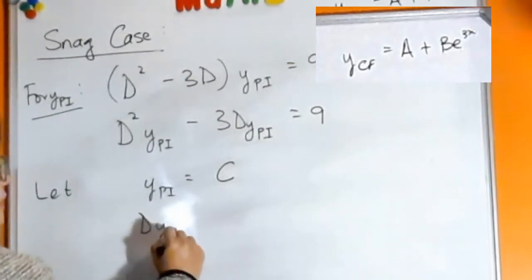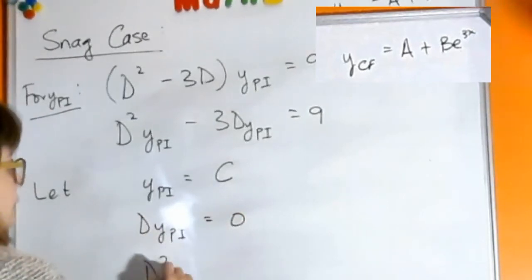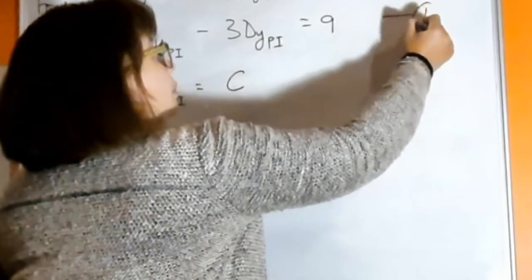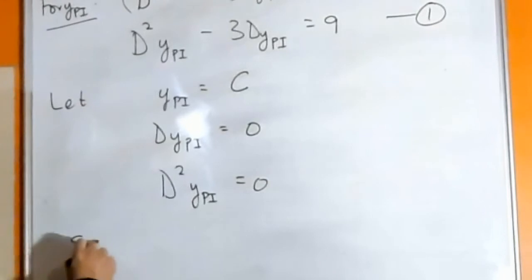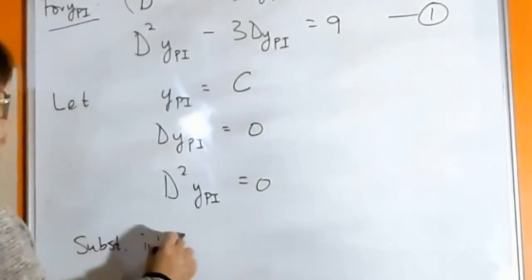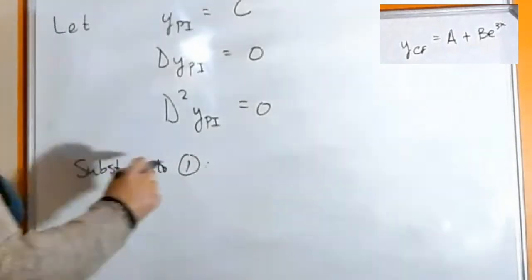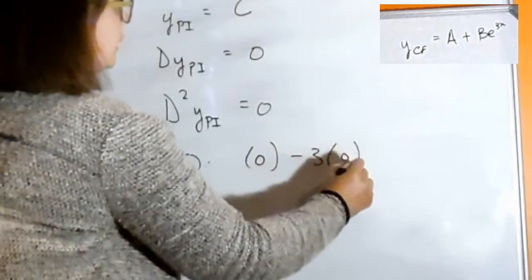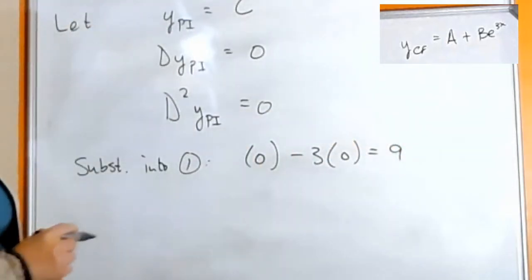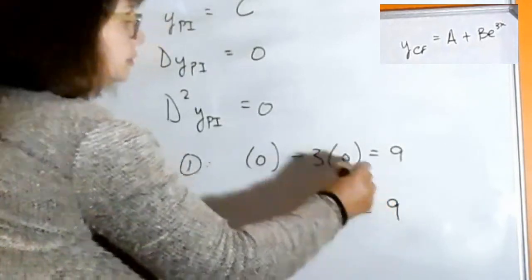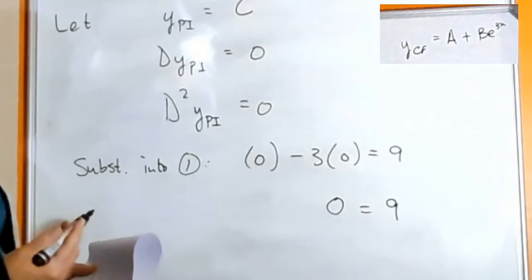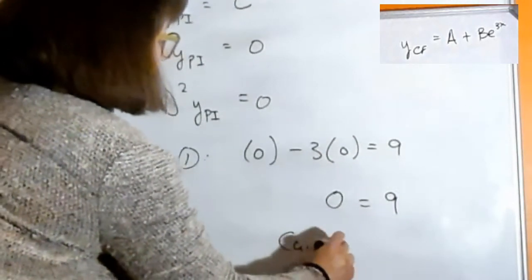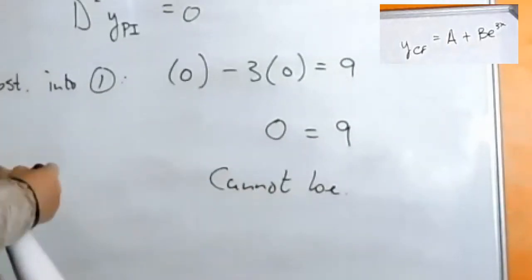So my first derivative is going to be zero and my second derivative is also going to be zero. And if I label that number one, I'm going to substitute into one. So what do I get? You get zero minus three times zero equals nine. So what we get is zero being equal to nine, which makes no sense. So this cannot be, our equation doesn't balance.